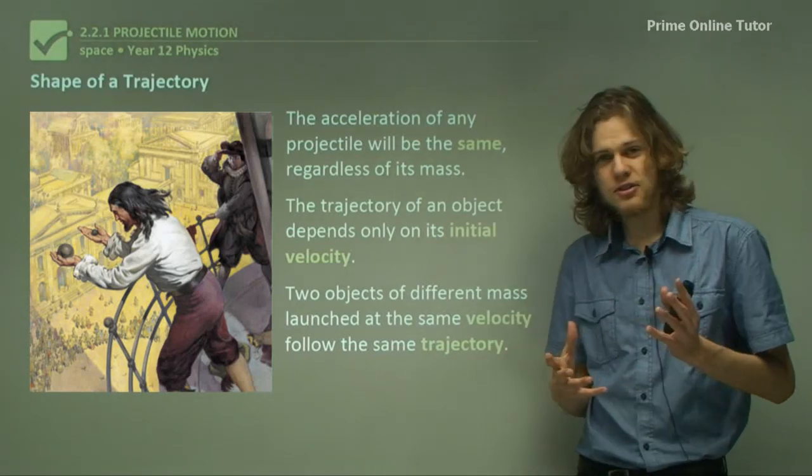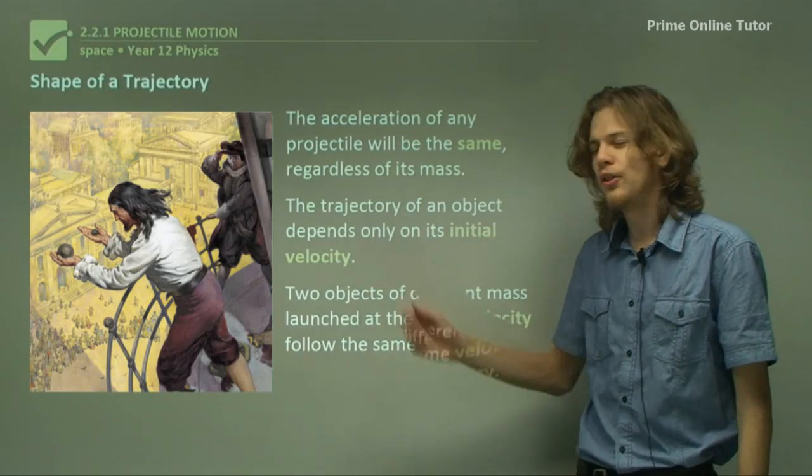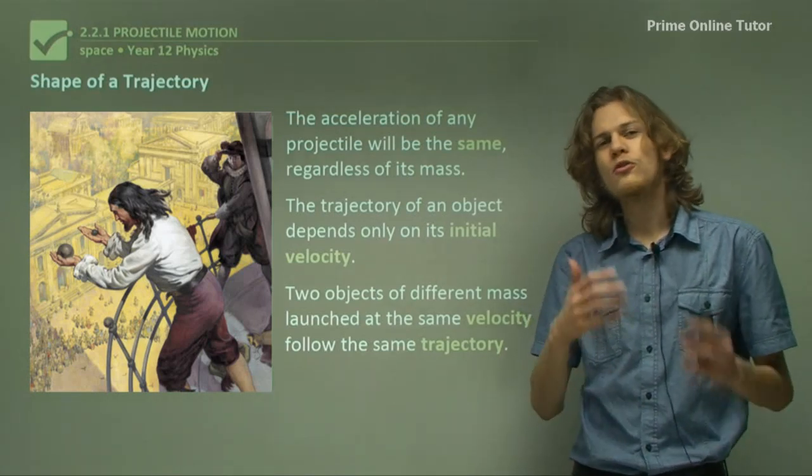Two objects of different masses launched at the same time, for example dropped off the Leaning Tower of Pisa, will follow the same trajectory.